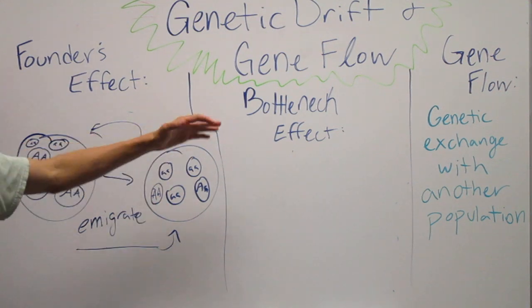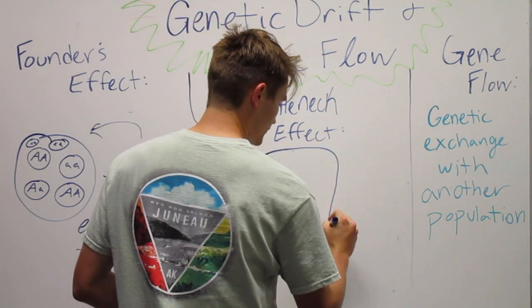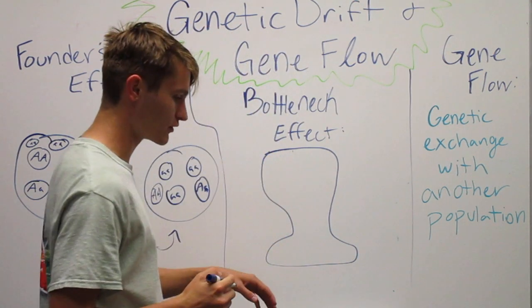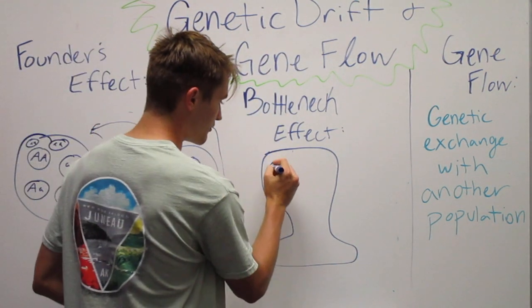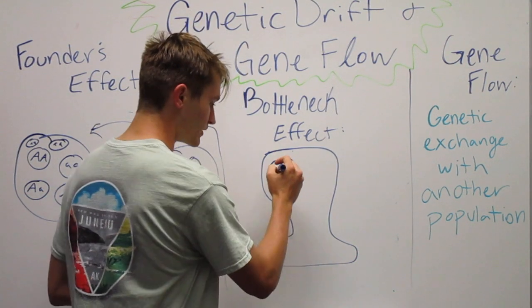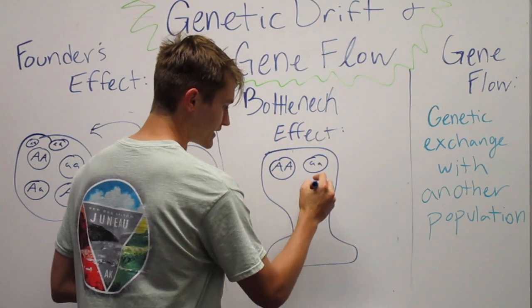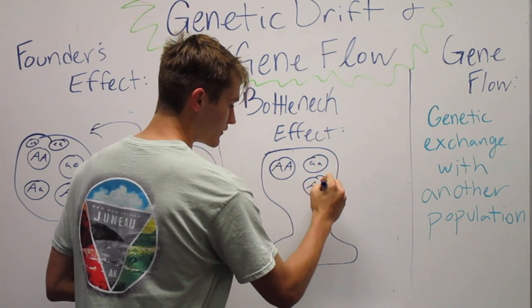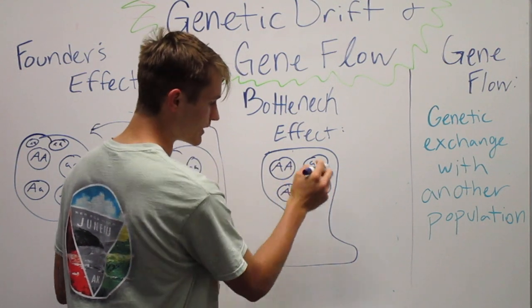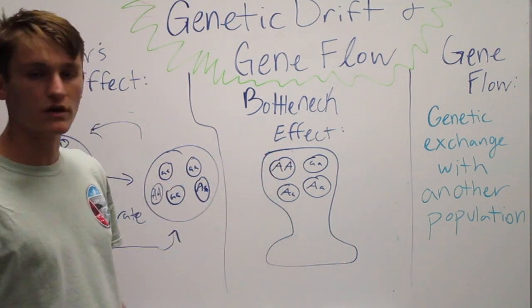The bottleneck effect, I'm going to try to draw my best version of a bottle. So we have a bottle, and in here we have a certain environment. You have some homozygous dominant, some homozygous recessive, you have some heterozygous, you have a little bit of everything in here. Certain ones will be more dominant than others.